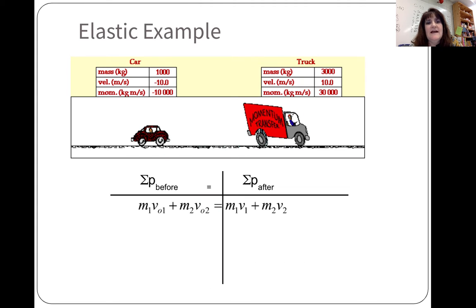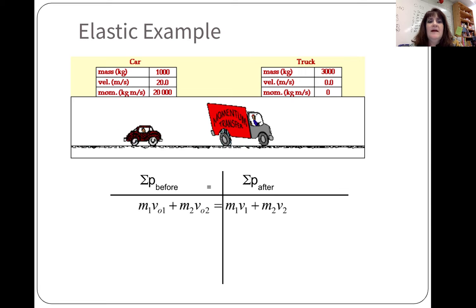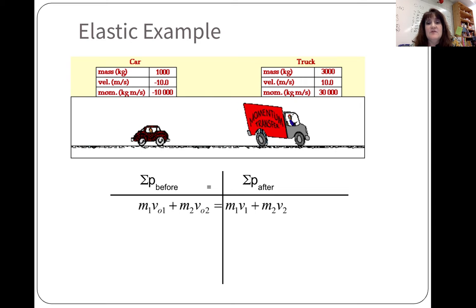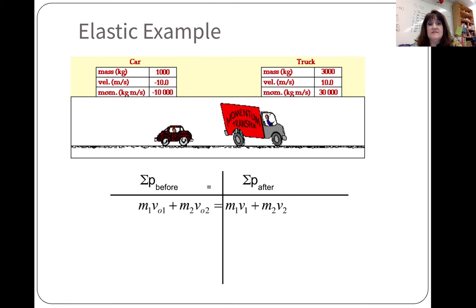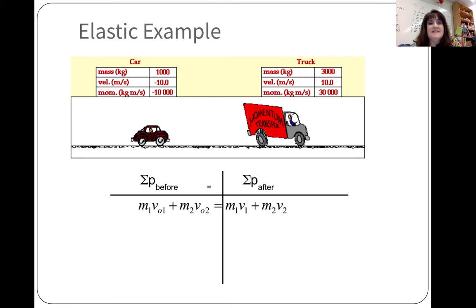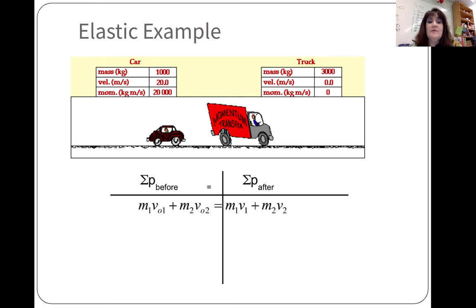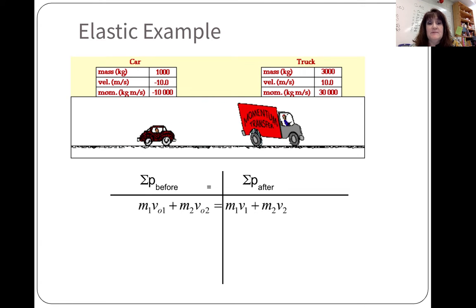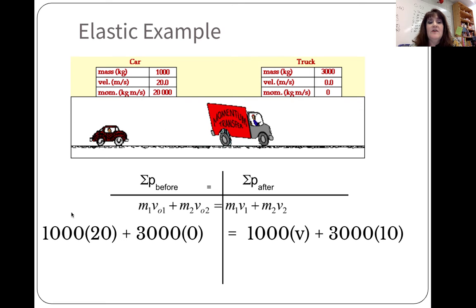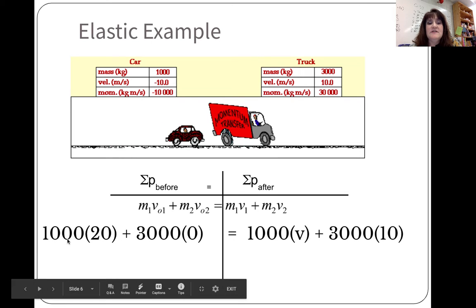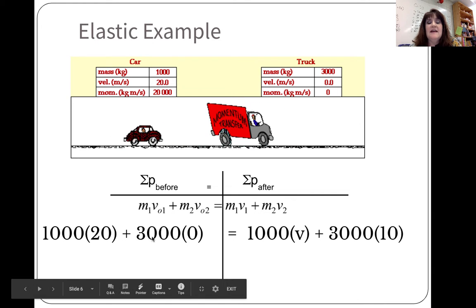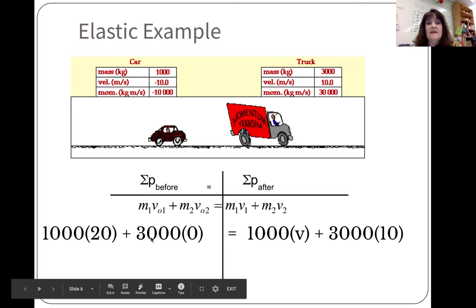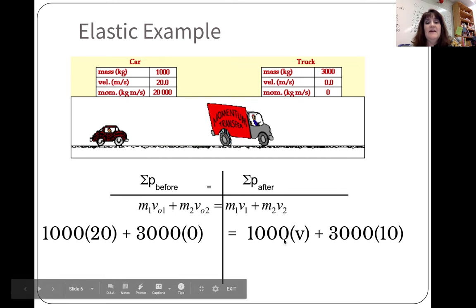Some examples. In this elastic example, we have a car hitting the back of a truck, and then notice that both of them then move in opposite directions. This is an elastic example. So we have the momentum before is equal to the momentum after. We start with the car that has a mass of a thousand kilograms moving at 20 meters per second, hits a stationary moving van of 3,000 kilograms, not moving. Afterwards, nobody loses a bumper or anything here.